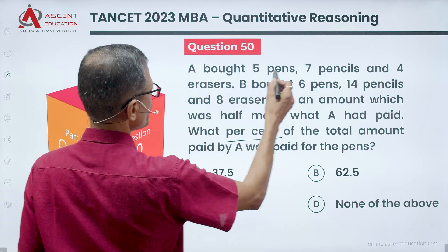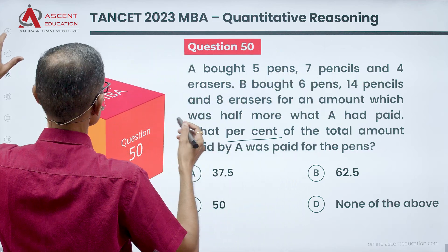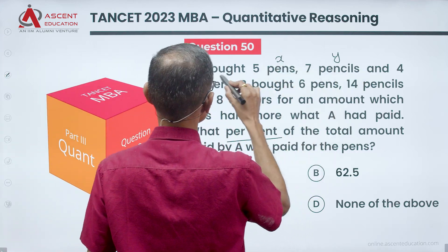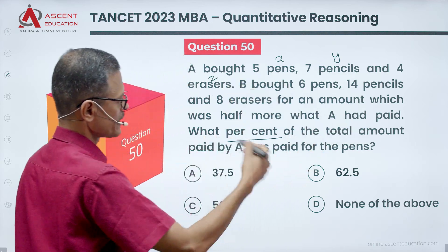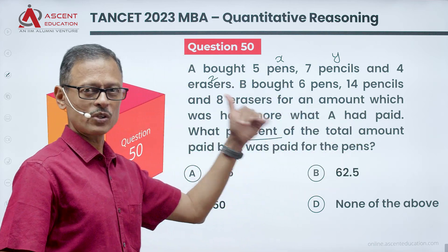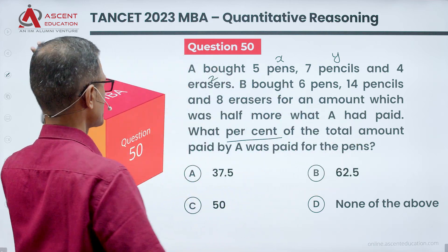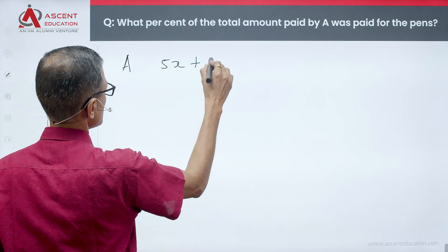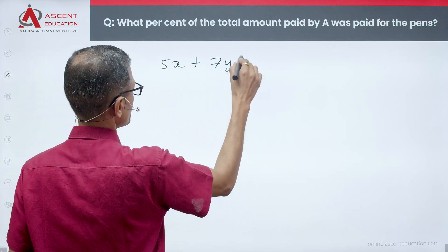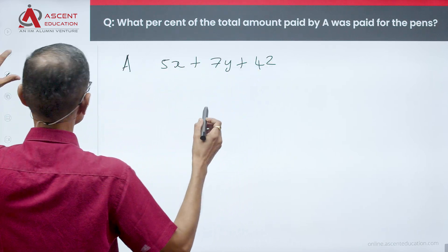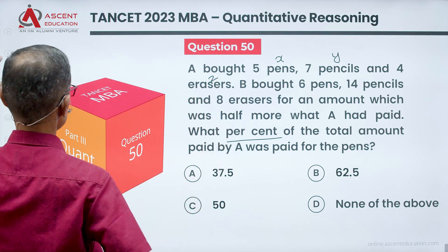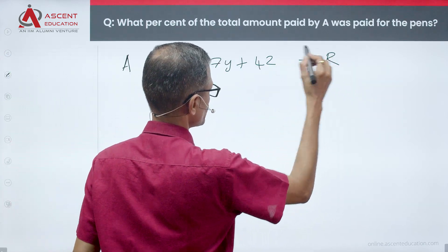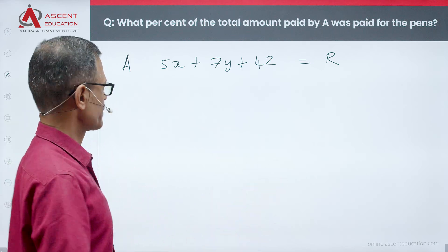A bought 5 pens, 7 pencils, and 4 erasers. We assign variables: a pen costs x, a pencil costs y, an eraser costs z. So A's total cost equation is: 5x + 7y + 4z = R.